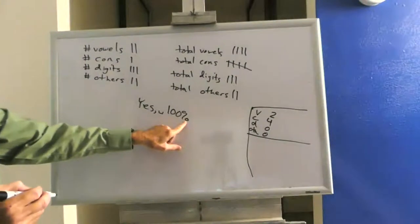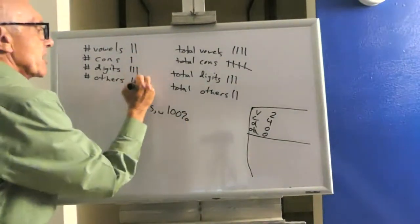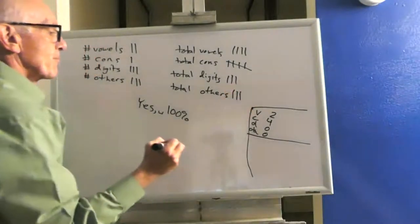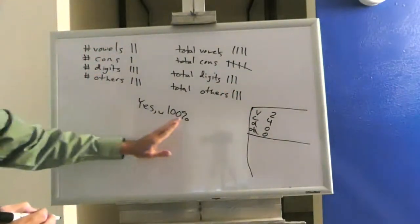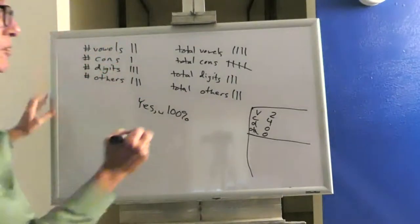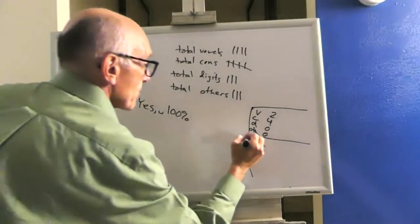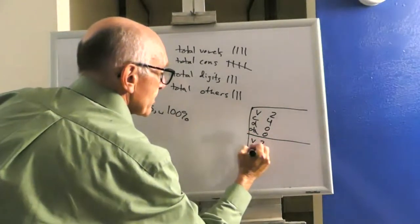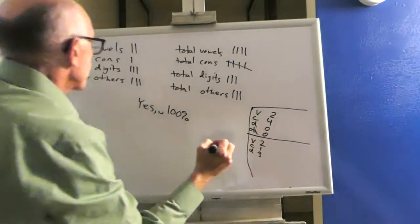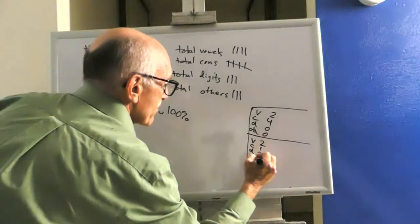Move on to the percent sign. Not a vowel. Not a consonant. Not a digit. It's an other. Since I've hit the end of this sentence, I now want to print out these totals. For my second sentence, I have two vowels, one consonant, three digits, and three others.